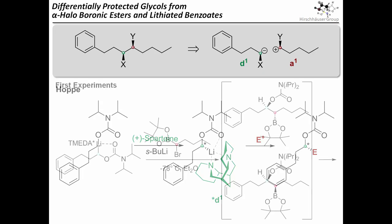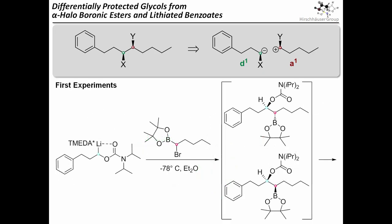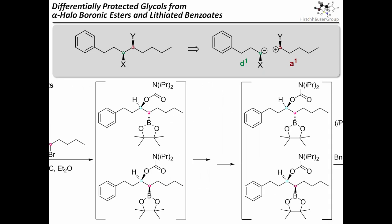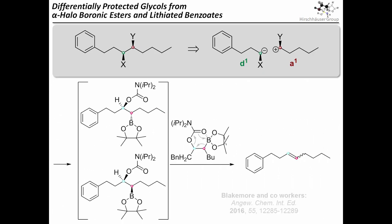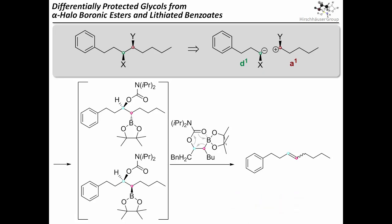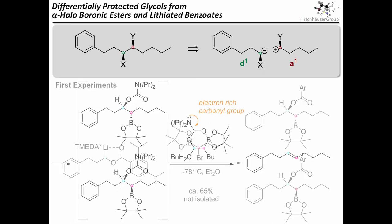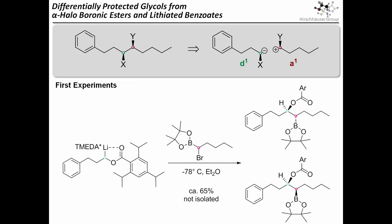A few years ago, we had tried this with a racemic TMEDA complex and racemic pinacolboronic esters. There we saw that the product had a strong tendency to undergo elimination. Just around this time, Blakemore published a quite similar reaction as a key step for the preparation of trisubstituted olefins. While the electron-rich carbamates were highly prone to syn-elimination, the less electron-rich triisopropylbenzoates, first introduced by Beak, produced moderately stable products.